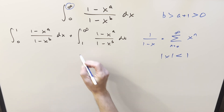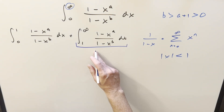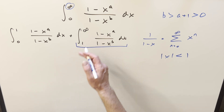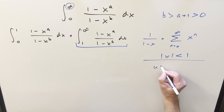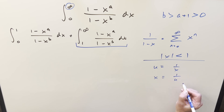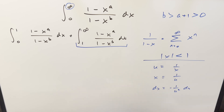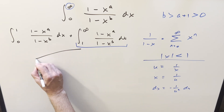Now let's focus on the integral from 1 to infinity. If we manipulate it with a substitution, we can get the bounds to go from 0 to 1. We'll do a u-substitution letting u equal 1 over x, so x equals 1 over u, and dx equals minus 1 over u squared du.